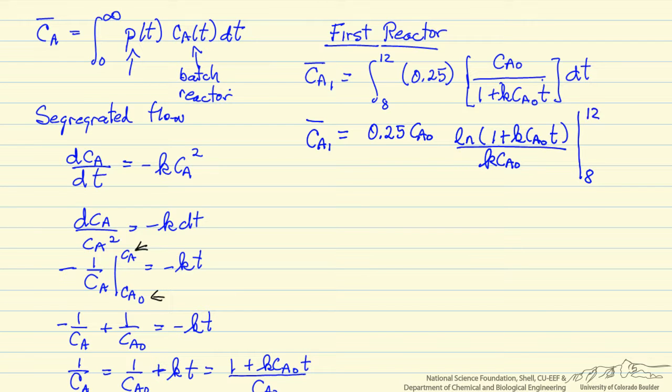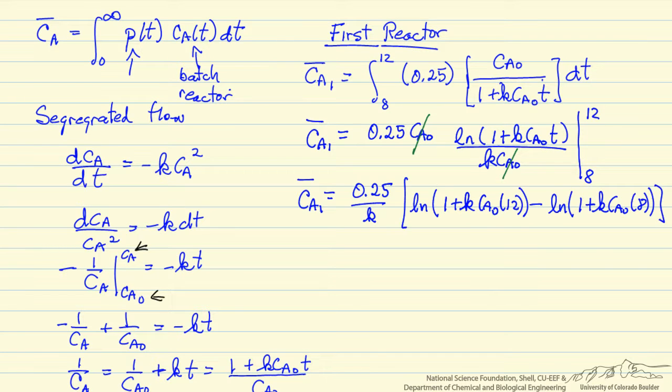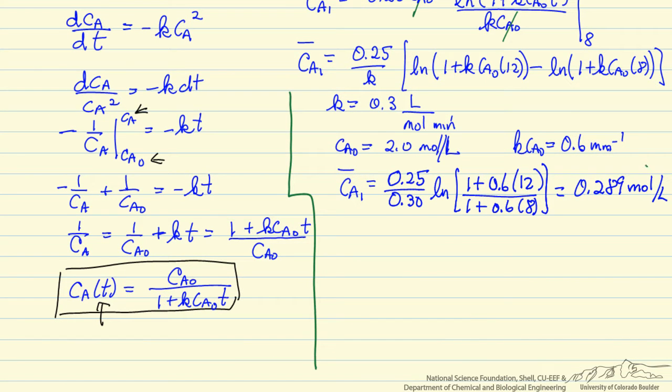Notice that the CA0 cancels here, and we can now substitute in the values, and then of course we have to substitute in the value for k, 0.3 liters per mole per minute, and the value for CA0, 2.0 moles per liter, so that k·CA0 is 0.6 minutes⁻¹. And we end up with the exit concentration from the first reactor.